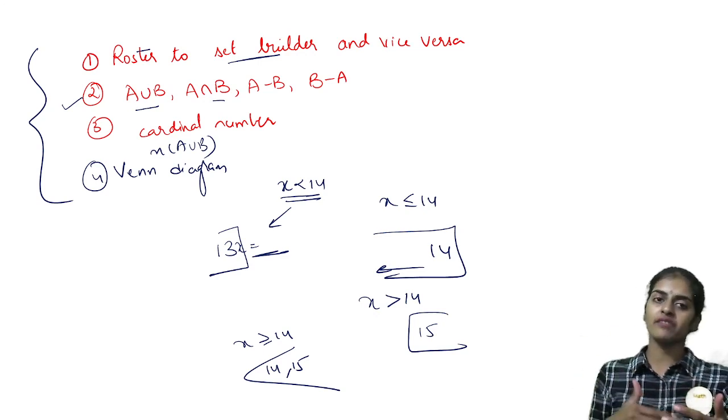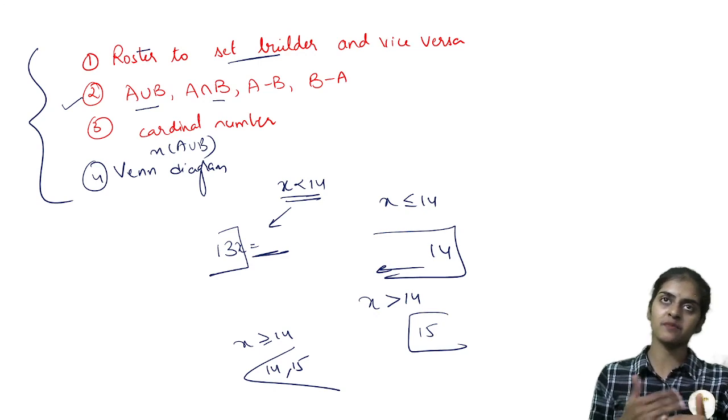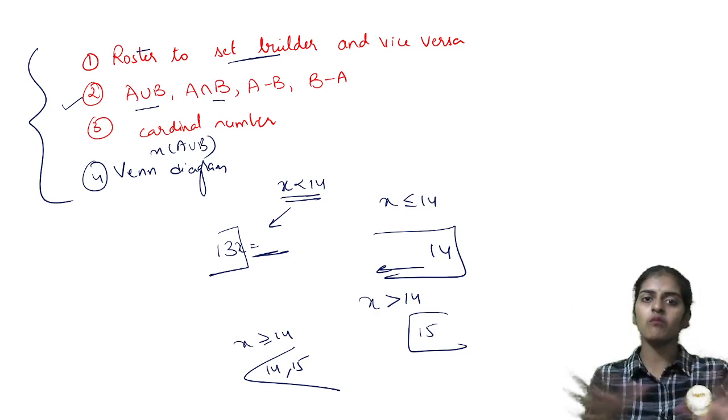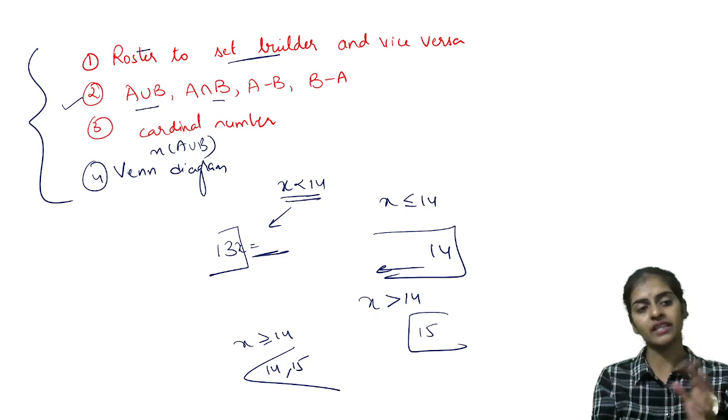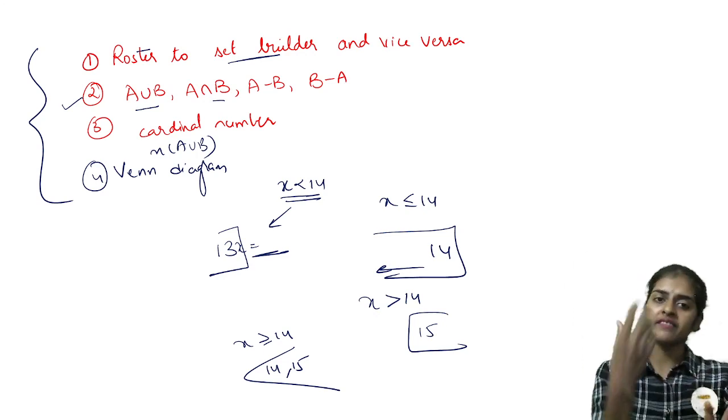n of A union B, n of A intersection B, n of A minus B, n of B minus A. So all models and do the Venn diagram also there only. So one single question if you take, you can complete sets in a very short way.